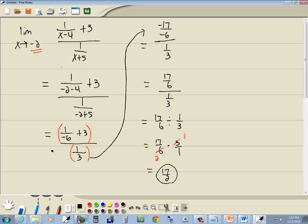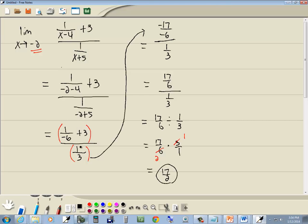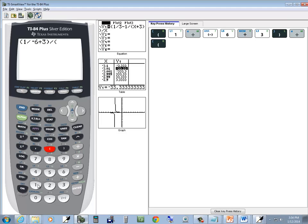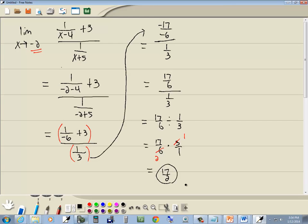So, do beginning parentheses on the top part. That's this one here. 1 divided by negative 6 plus 3, closing parentheses, divided by beginning parentheses around the bottom part, 1 divided by 3, and then my closing parentheses. Enter. And then you do math, enter, enter. And it'll give you your 17 halves.